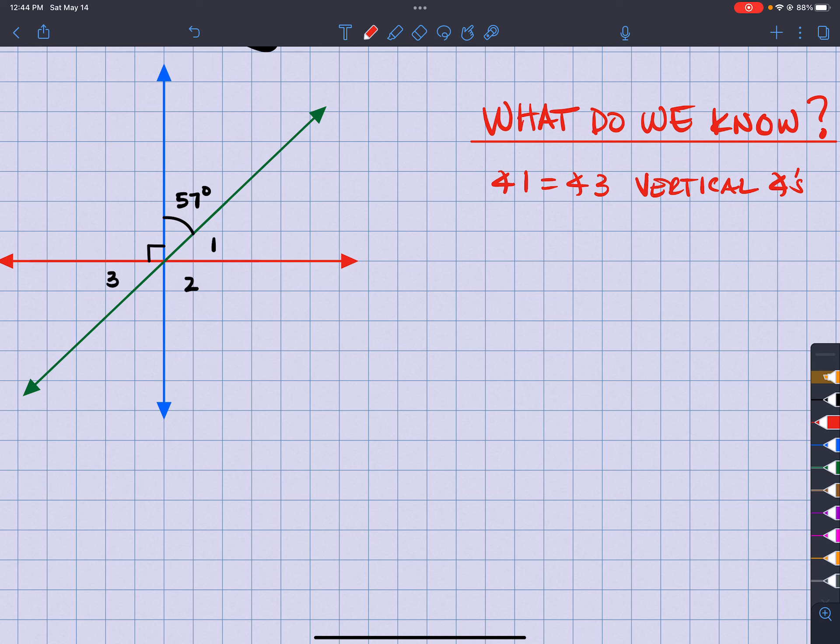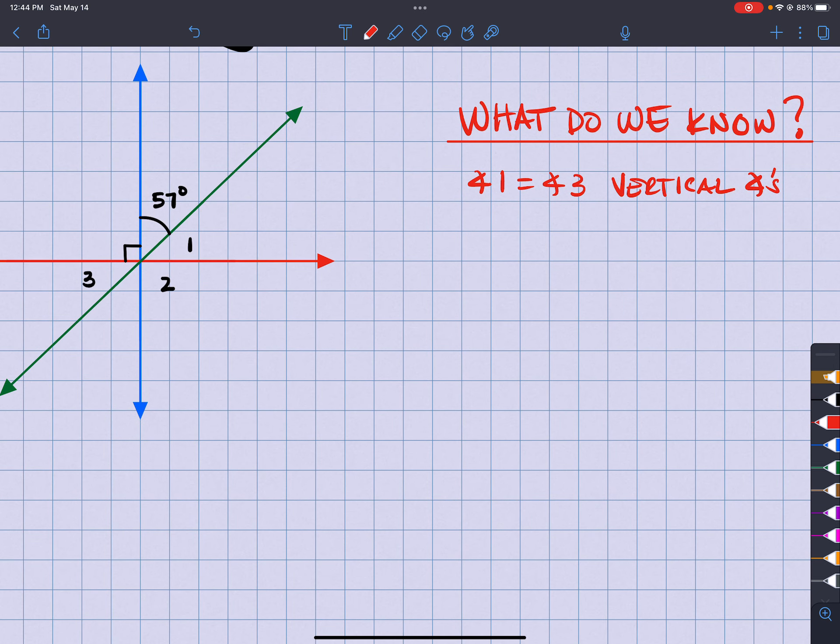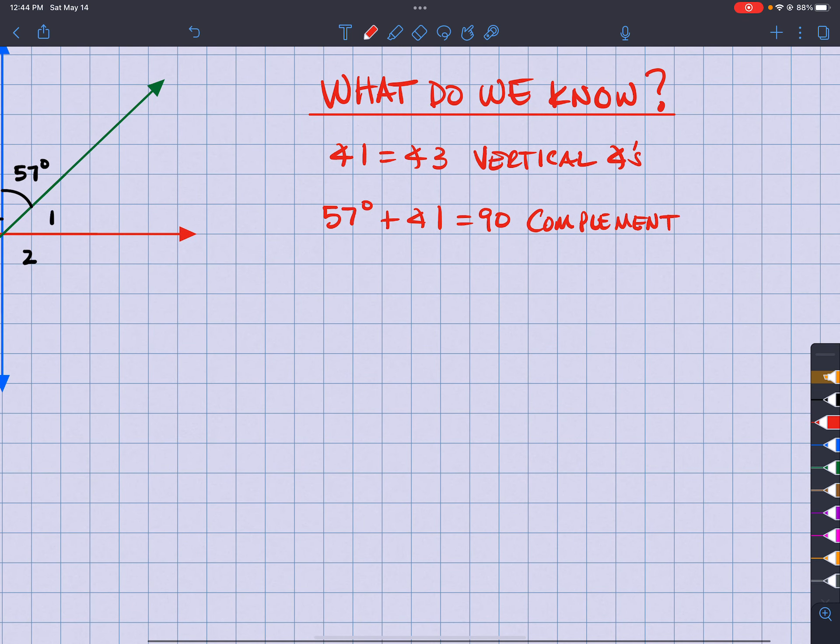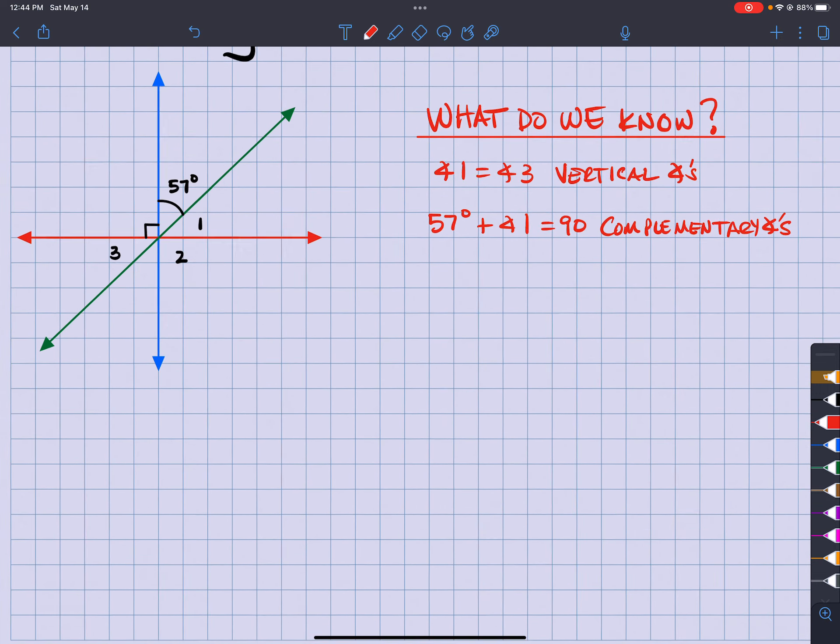Now, if you look right here, if you just focus right here, what do you know? You know that 57 degrees and angle 1 are going to form a 90 degree angle. So those are going to be complementary. So we know that 57 degrees plus angle 1 is going to be complementary angles.